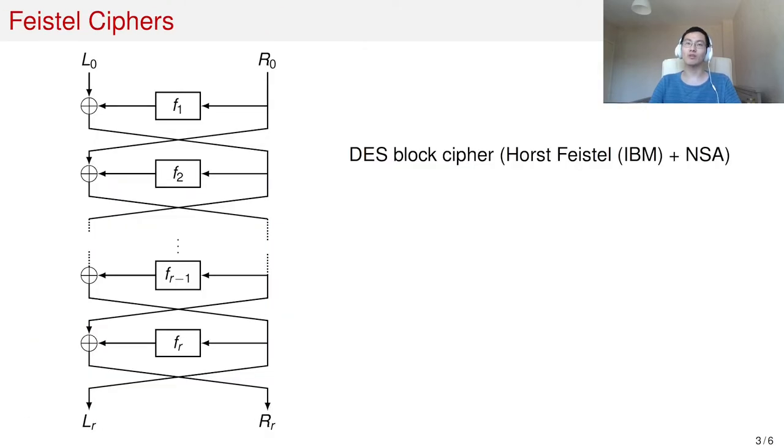This self-inverse property can also be found in modern ciphers, for example, ciphers based on the Feistel network. A famous example is the DES block cipher.